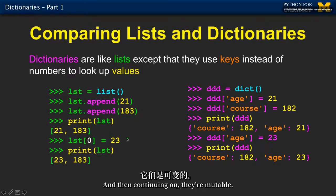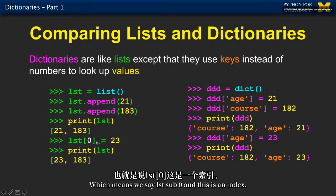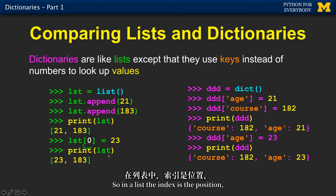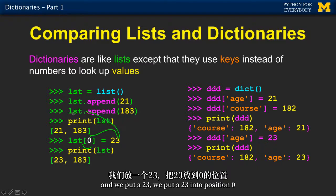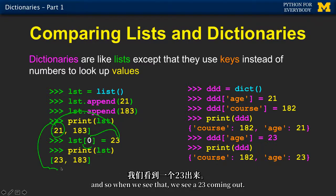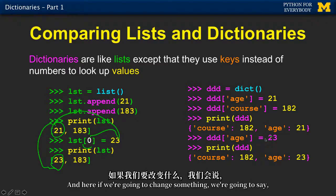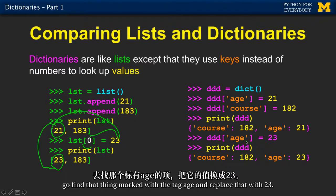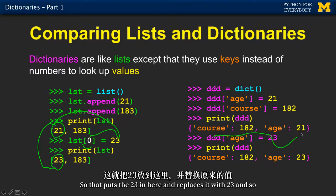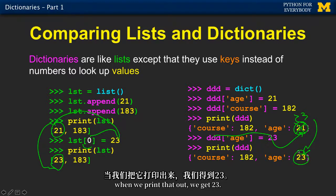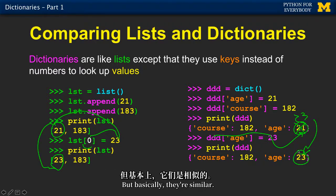And then continuing on, they're mutable, which means we say list sub zero. And this is the index. So in a list, the index is the position, and we put a 23. We put a 23 into position zero. And so when we see that, we see a 23 coming out. And here, if we're going to change something, we're going to say, oh, go find that thing marked with the tag age and replace that with 23. So that puts the 23 in here and replaces it. And so when we print that out, we get 23. But basically, they're similar.